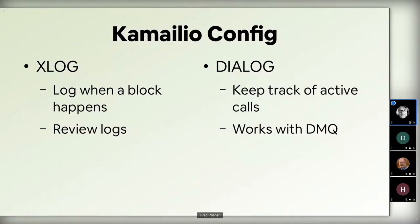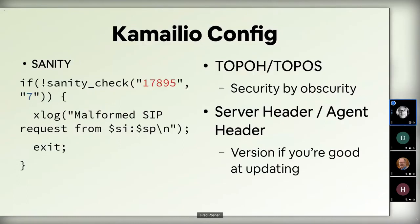Across your network, if a user connects to Berlin with two calls and then has two more calls in London, you can keep track that this user has four calls and not let them make any more. So managing unwanted sub-traffic through Dialog and DMQ works really well in your config.